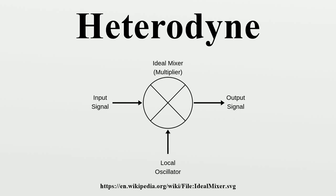Heterodyning is a radio signal processing technique invented in 1901 by Canadian inventor and engineer Reginald Fessenden, in which new frequencies are created by combining or mixing two frequencies. Heterodyning is used to shift one frequency range into another new one, and is also involved in the processes of modulation and demodulation. The two frequencies are combined in a non-linear signal processing device such as a vacuum tube, transistor, or diode, usually called a mixer.